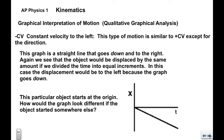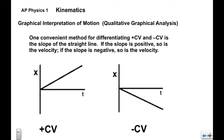Constant velocity to the left (-CV) is similar to +CV except for direction. This graph is a straight line going down and to the right. The object is displaced by the same amount in each equal time increment, but the displacement is to the left. One convenient method for differentiating +CV and -CV is the slope: if the slope is positive so is the velocity; if the slope is negative so is the velocity. So +CV is up and to the right; -CV is down and to the right.